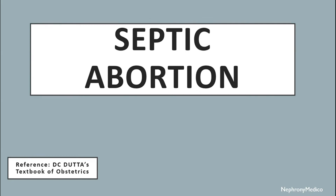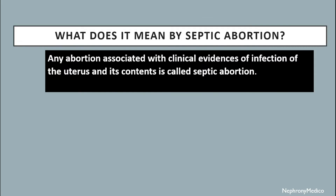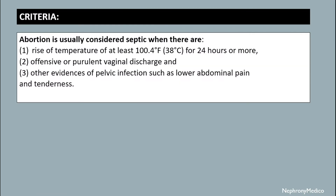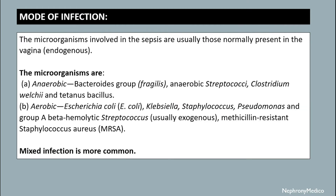Hello and welcome. Let's talk about septic abortion. Any abortion associated with clinical evidence of infection of the uterus and its contents is known as septic abortion. Abortion is usually considered septic when there is a rise of temperature of at least 100.4 degrees Fahrenheit for 24 hours or more, offensive or purulent vaginal discharge, and other evidences of pelvic infection such as lower abdominal pain and tenderness.